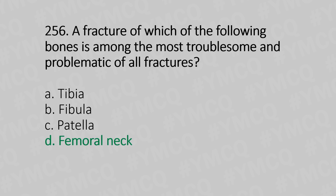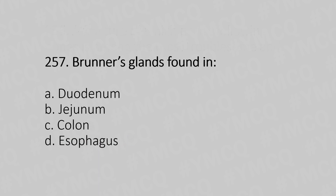Question 257: Brunner's gland is found in — Option A: duodenum. Option B: jejunum. Option C: colon. Option D: esophagus. The answer is Option A, duodenum.